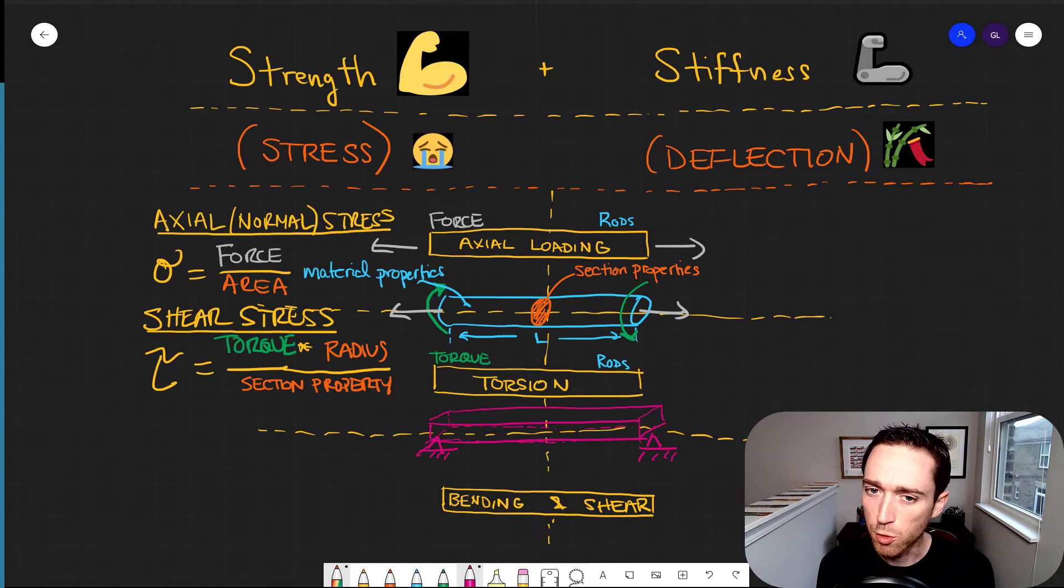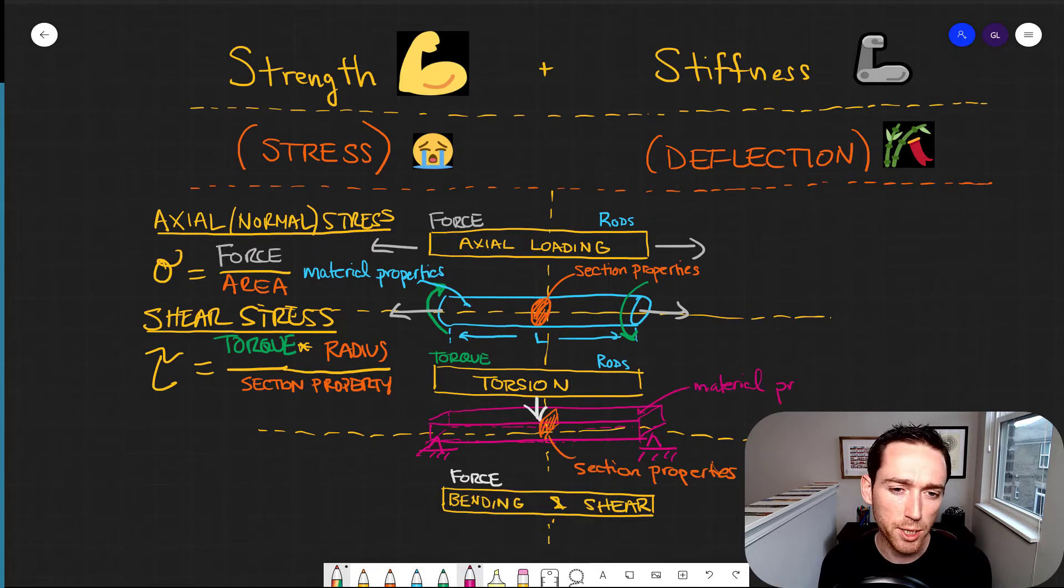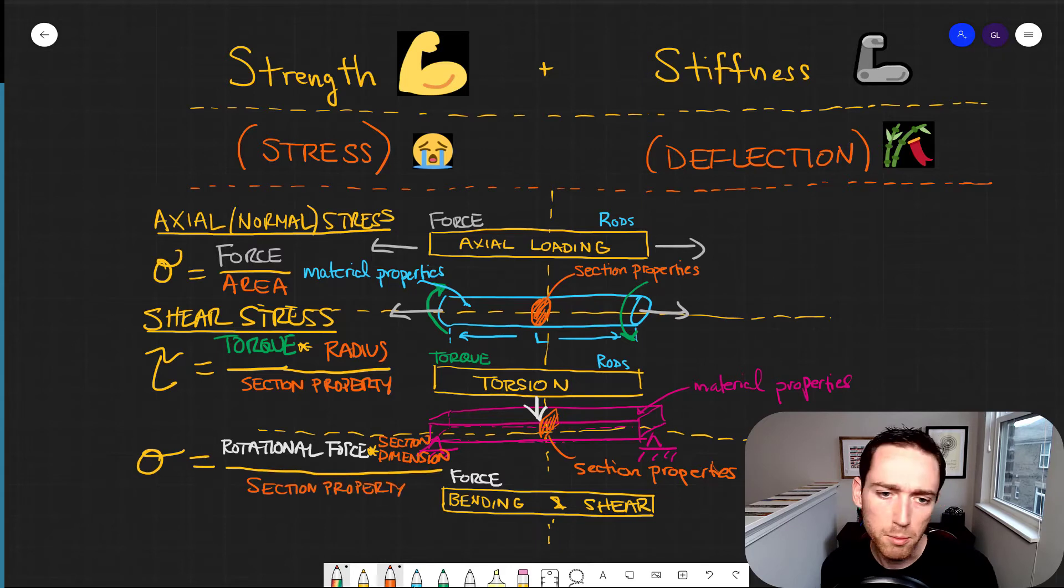So when we go and we look at bending and transverse shear in 3D, it's the same thing. Forces and geometry info. That's it. Force over area. That's stress.